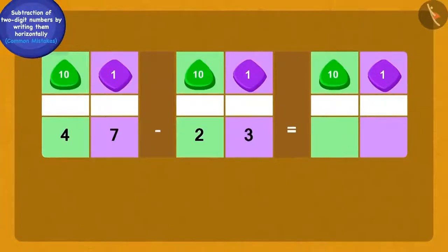Bola observed that in this subtraction, three ones of 23 were being subtracted from four tens of 47. Another mistake has been made by subtracting the two tens of 23 from the seven ones of 47.